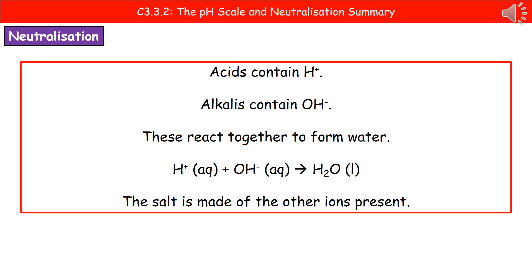Looking at neutralisation in terms of GCSE knowledge, we need to remember the additional information about acids and alkalis from earlier. Acids contain hydrogen ions; alkalis contain hydroxide ions. Hopefully you can see that there are two hydrogens and one oxygen, and the formula for water is H₂O. So what we see happening is the hydrogen ions and hydroxide ions react together to form our water molecule. The equation is: H⁺ (aqueous) + OH⁻ (aqueous) → H₂O (liquid). What we'll also find being made is a salt, from whatever other ions are present.